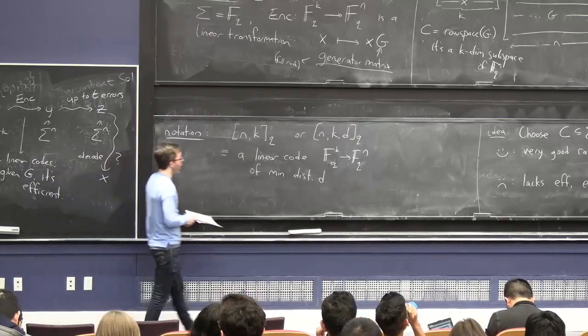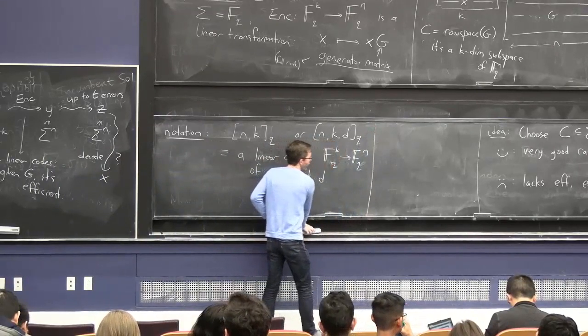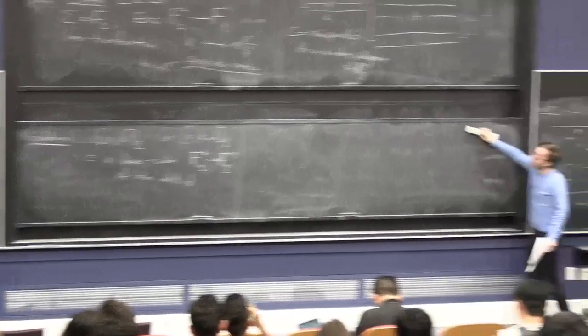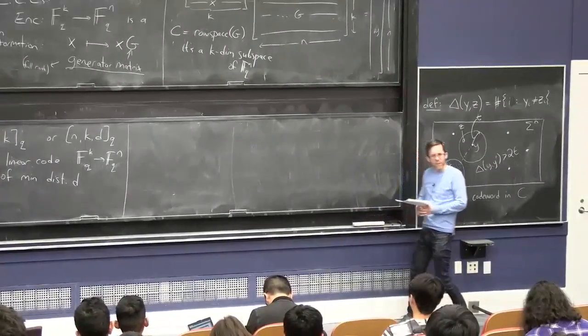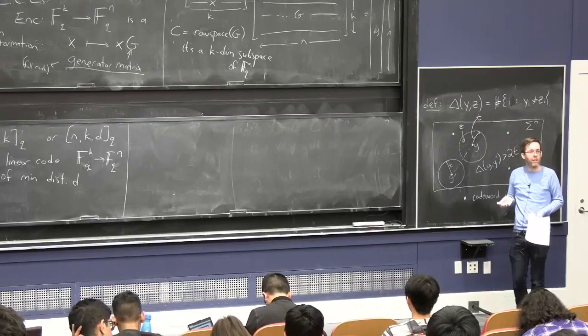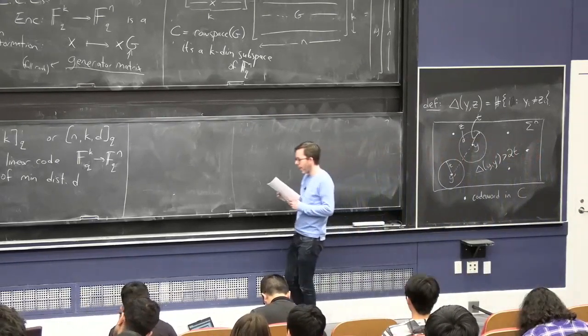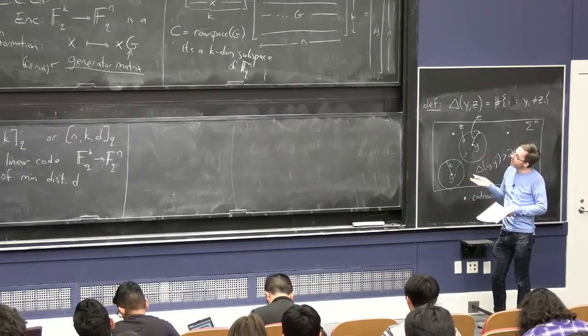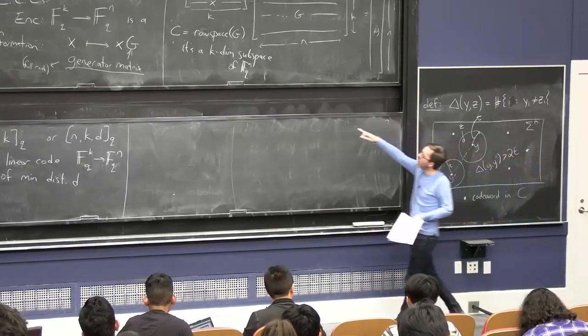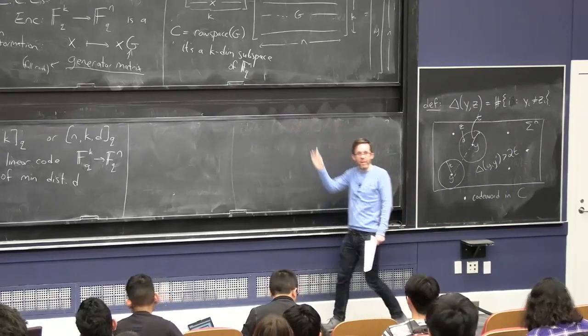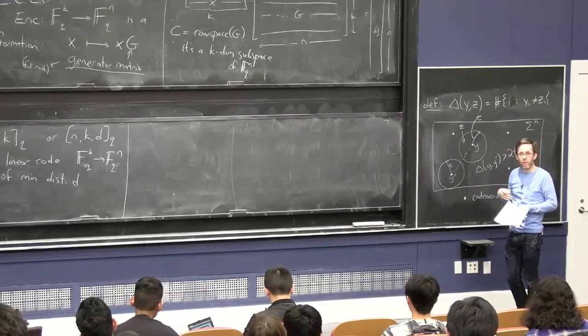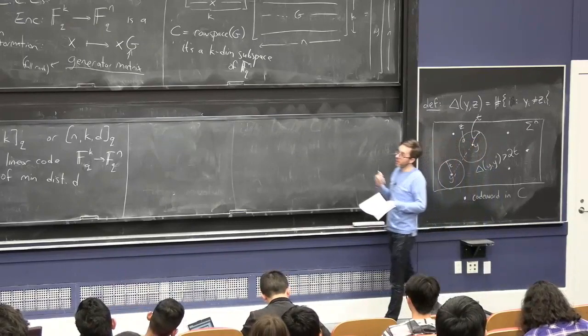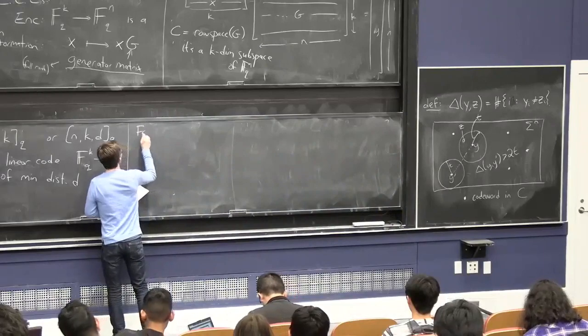Let's think about the decoding problem. Given a received word z, how can we find the closest vector in the range of the code to z? First, how can we recognize if a received word is in the code - no errors? This is nice in the linear algebraic setting. There's a nice characterization of when a vector is in the range of a linear transformation.